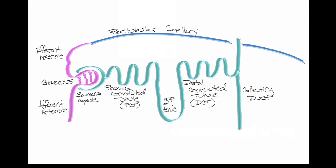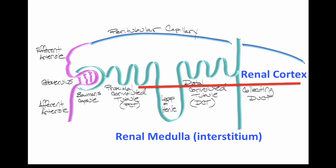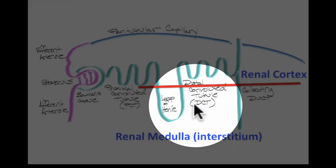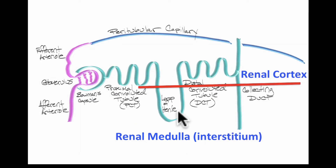This is a slide we looked at last class showing all the components of the nephron. What we're focusing on today is everything below the red line. Above the red line is the periphery of the kidneys, known as the renal cortex. Below the red line represents the renal medulla, also known as the interstitial. The activity of the countercurrent multiplier system occurs with the loop of Henle and an associated blood vessel known as the vasa recta, and it is spatially and functionally related to the collecting duct. We are going to create the hyperosmotic renal medulla in this whole area, allowing for reabsorption of water from the collecting duct when needed.